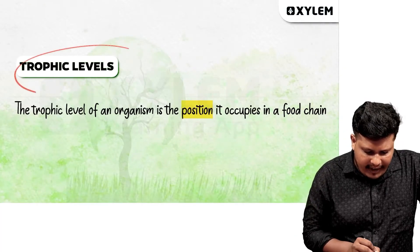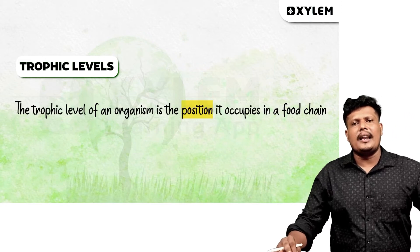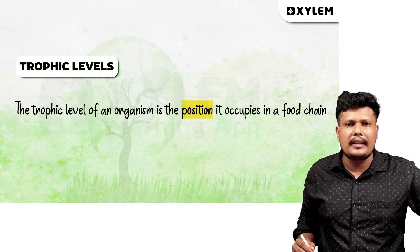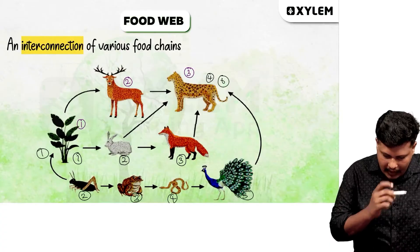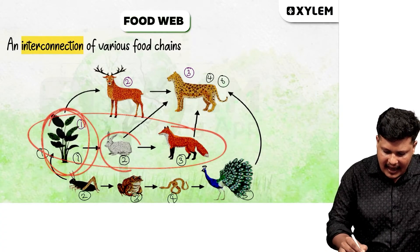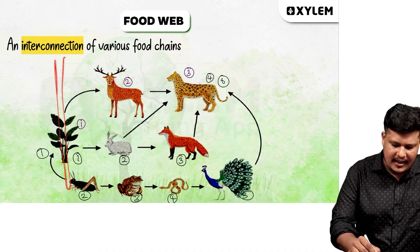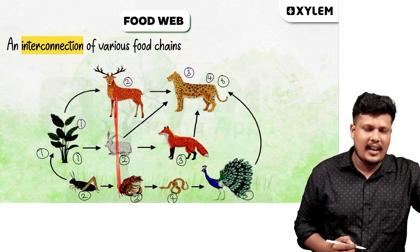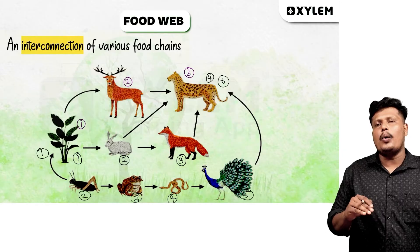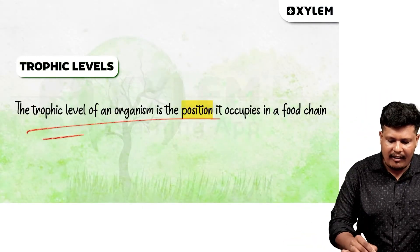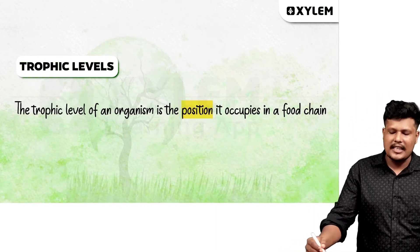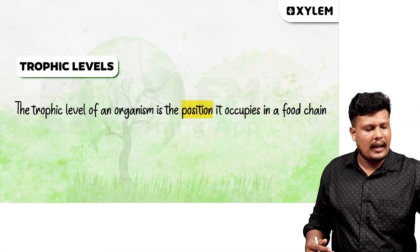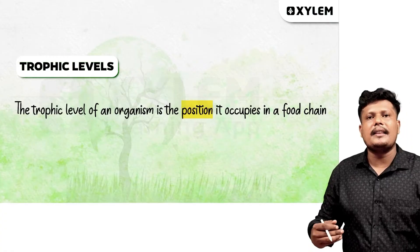What do we call the trophic level? It is very simple. The trophic level is the position that an organism occupies in the food chain. In the food chain, the position an organism occupies — that is what we call the trophic level.